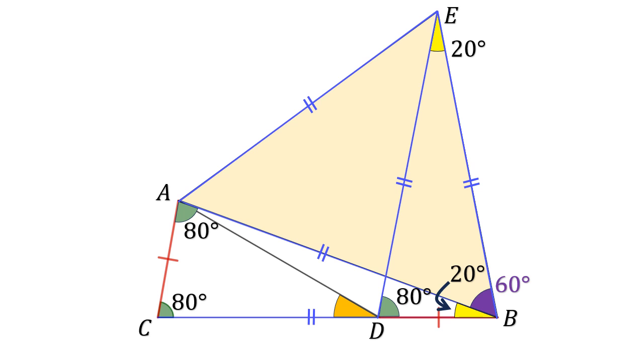So, this allows us to find angle AED, which will be 60 degrees, take away 20 degrees, which is 40 degrees. And since the side AE is also equal to the side ED, we have an isosceles triangle here. This allows us to find the base angle, angle EDA, to be 70 degrees.